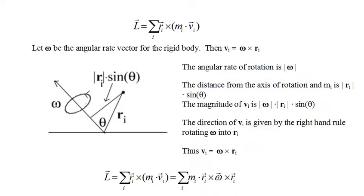The expression for the total angular momentum of a rigid body rotating about its center of mass is shown at the top of the page. Let omega be the instantaneous rotation rate vector for the rigid body. Then the velocity of the mass m sub i at location r sub i is given by the cross product of omega and r sub i. Making this substitution for v sub i gives the expression for total angular momentum at the bottom of the page. Now it's just a matter of taking the cross products to get an expression for total angular momentum in component form.